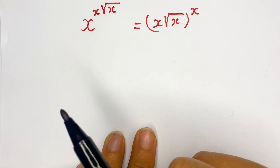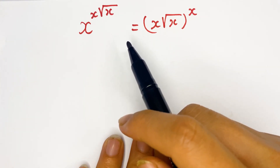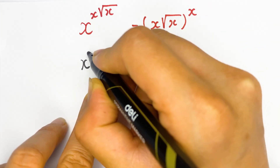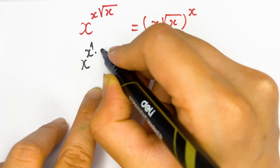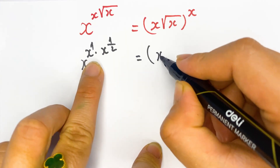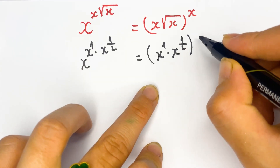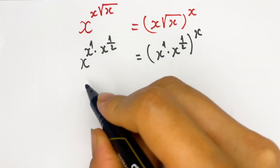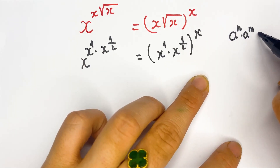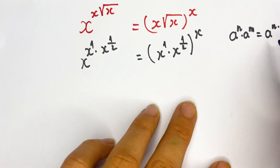Hello everyone. How to find the value of x in this exponential equation. Firstly, you can write x^(x^1 · x^(1/2)), and here the same — you can write x^1 times x^(1/2), that is x^(1+1/2). The property of exponents states a^n times a^m equals a^(n+m).